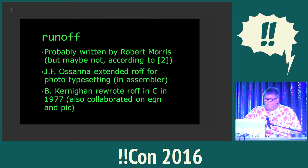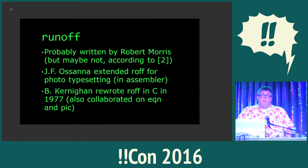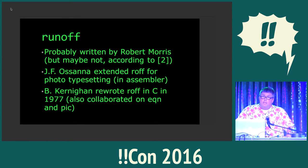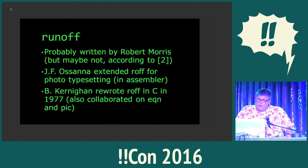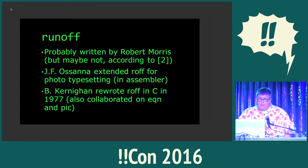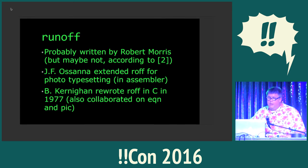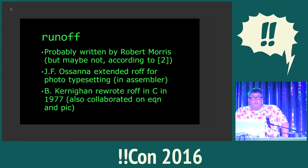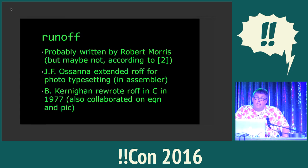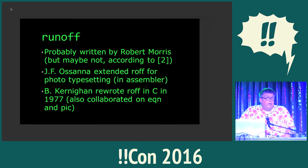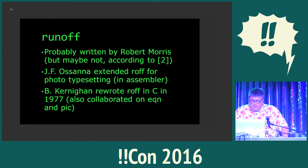Runoff was originally written for CTSS, another old time-sharing system. It was ported to Unix by Robert Morris, who was also at Bell Labs — a pretty famous computer scientist. Later, they got a photo typesetter, and a guy named Joe Ossanna wrote or translated Roff into assembler so he could do photo typesetting with this macro package. After Ossanna passed away in 1977, Brian Kernighan rewrote Roff in C and added EQN, Table, Pic, and other tools. EQN, a package for typesetting equations and scientific literature, was co-written by Lorinda Cherry and Brian Kernighan — there's a fascinating paper called "Typesetting Papers for Mathematical Equations" you can still read.